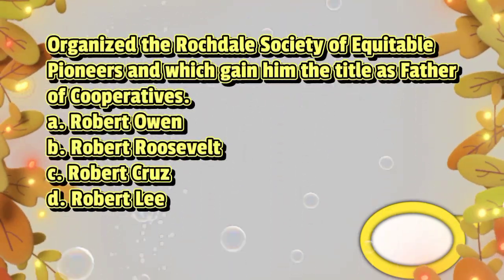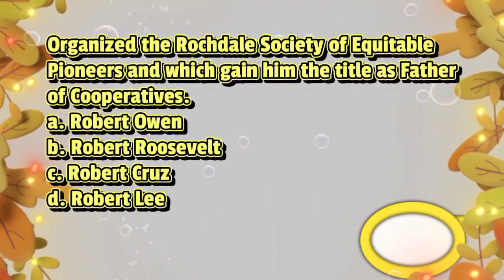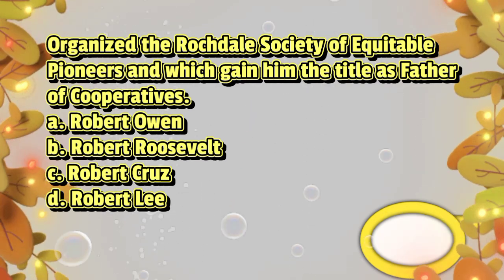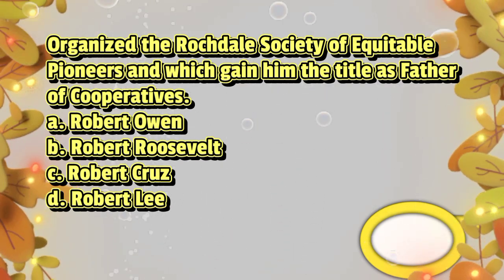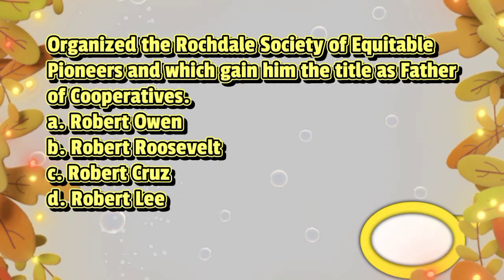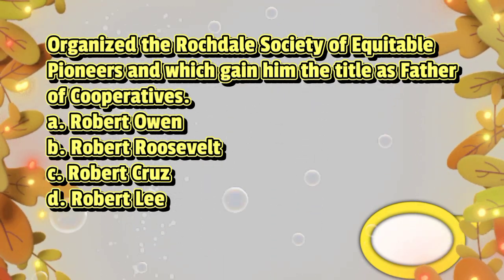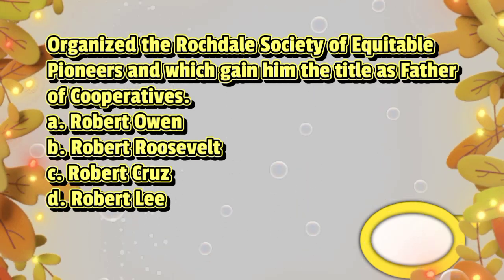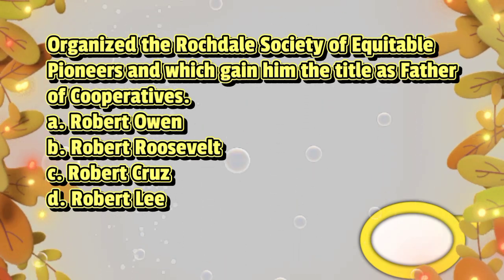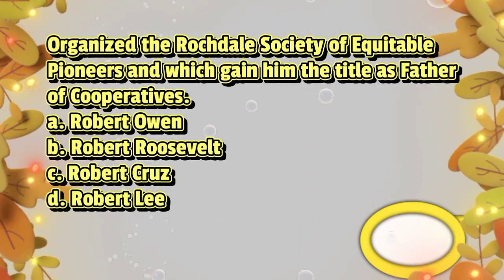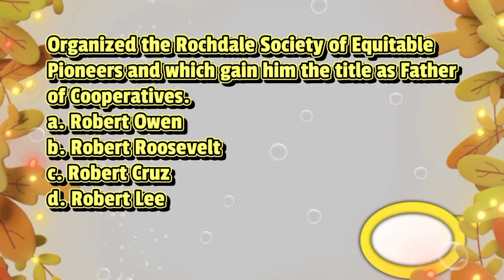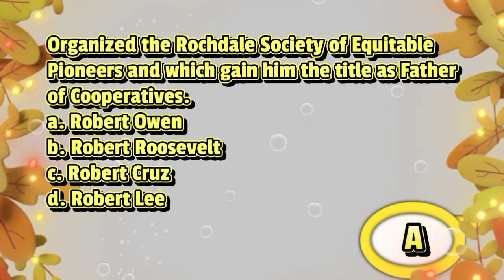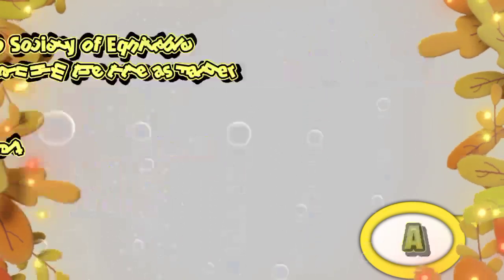Organized the Rochdale Society of Equitable Pioneers, which gained him the title as father of cooperatives. A. Robert Owen, B. Robert Roosevelt, C. Robert Cruz, D. Robert Lee. The answer is letter A.